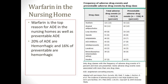Warfarin in the nursing home. This is really the only nursing home-specific data I've been able to find. What's interesting is that warfarin is the top reason for adverse drug events in nursing homes — 15% for preventable and 12% for non-preventable adverse drug events. Twenty percent of adverse drug events are hemorrhagic events, and 16% of preventable adverse drug events are hemorrhagic. This is something that affects us on a regular basis.